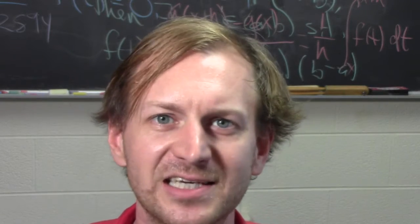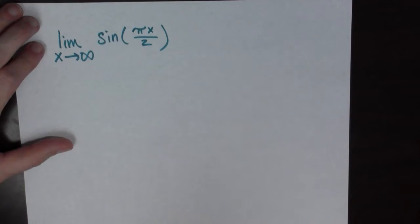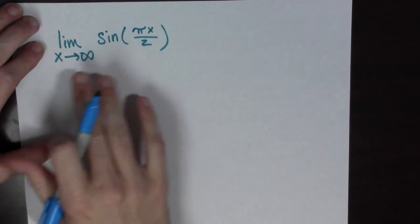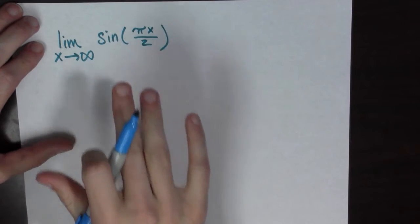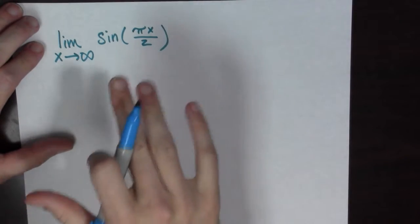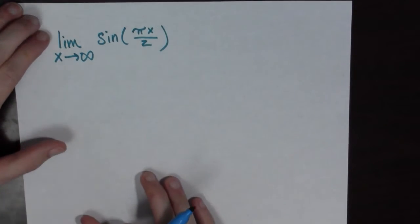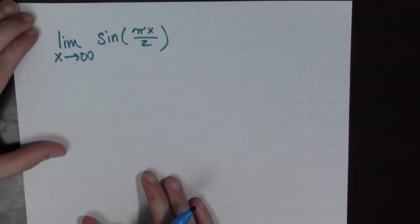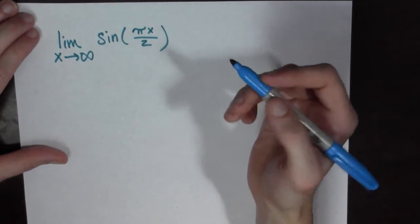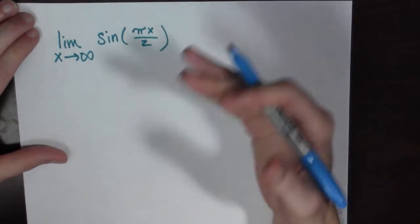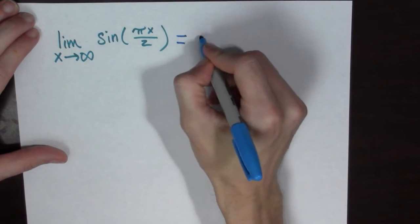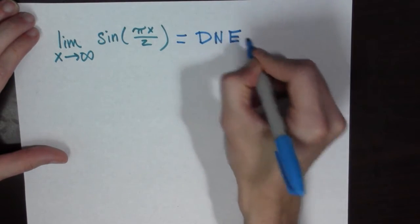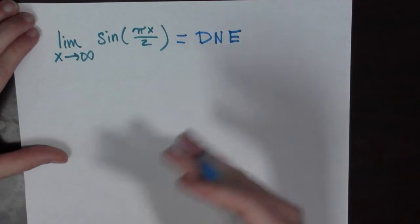Done! Next example. Here we have the limit as x goes to infinity of sin of pi x all over 2. This problem is a little different than the ones we've seen before it. I'm just going to tell you what the answer is: this limit does not exist. And the question is why?